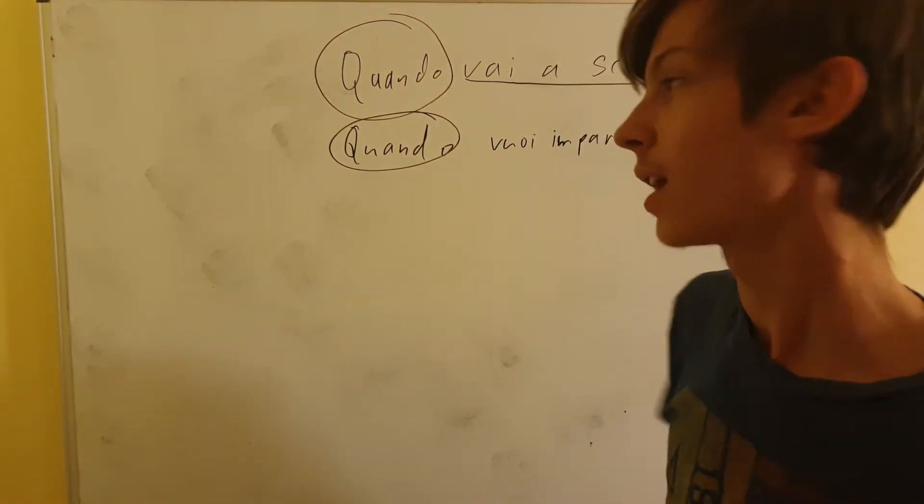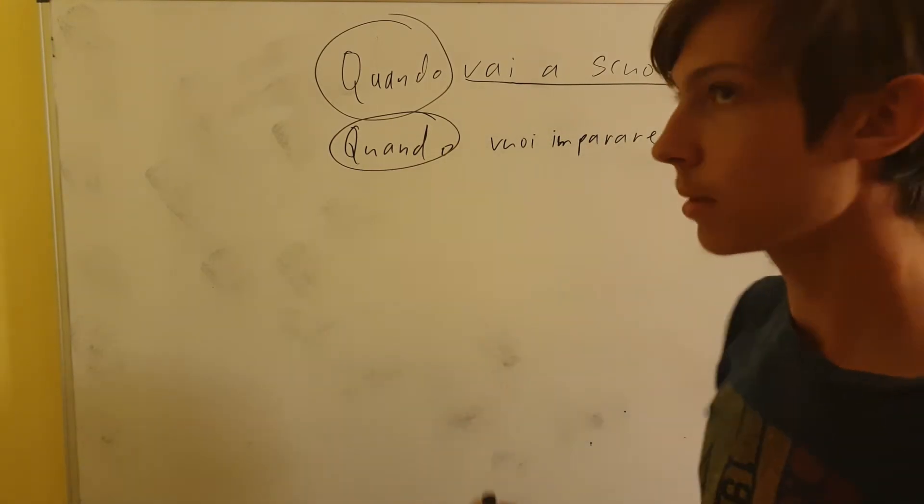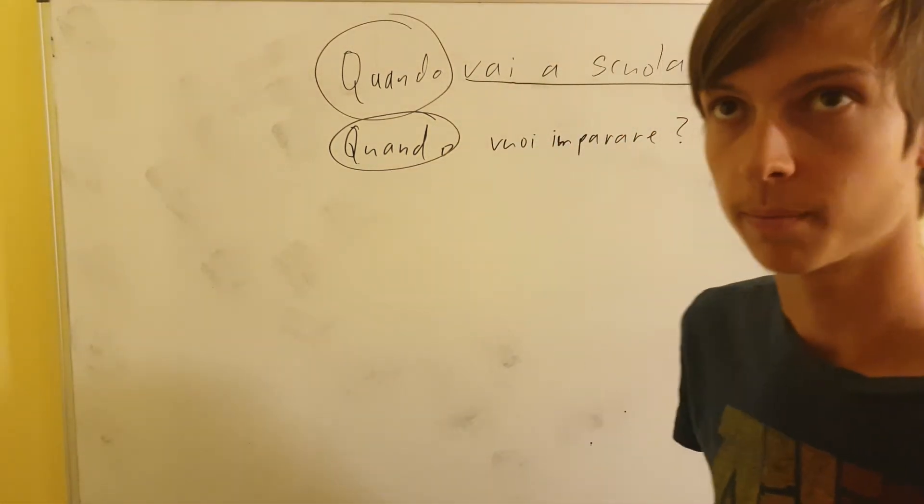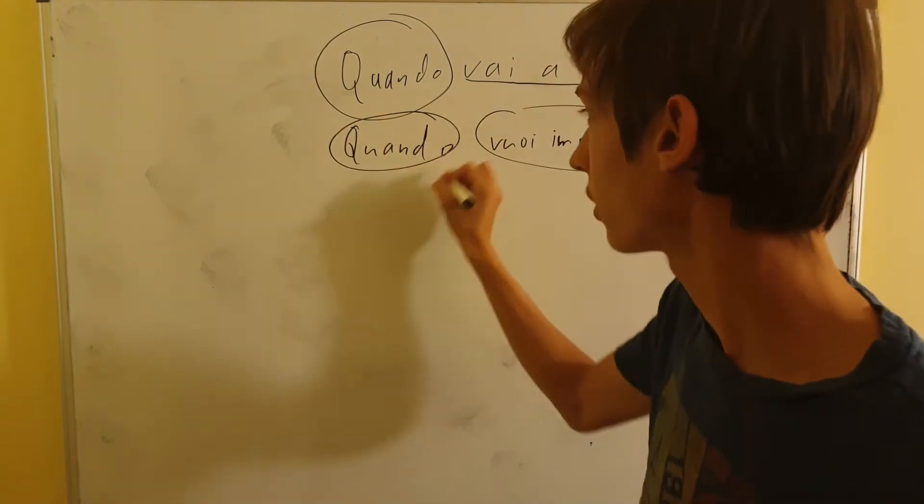Again the same, doesn't change. Quando vuoi imparare means when do you want to learn? Still present tense. You want to learn? Quando is when.